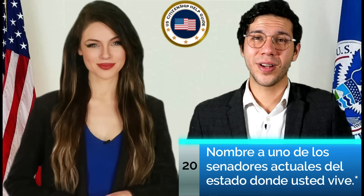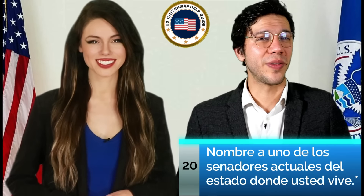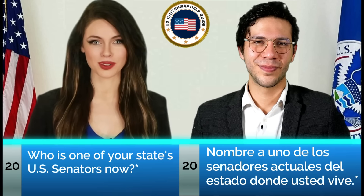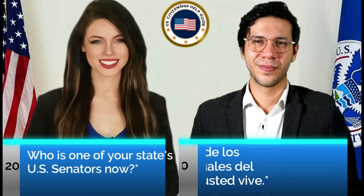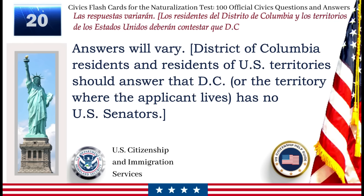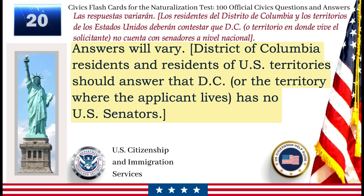Nombre a uno de los senadores actuales del estado donde usted vive. Who is one of your state's U.S. senators now? Las respuestas variarán. Los residentes del Distrito de Columbia y los territorios de los Estados Unidos deberán contestar que D.C. o territorio donde vive el solicitante no cuenta con senadores a nivel nacional. Answers will vary. District of Columbia residents and residents of U.S. territories should answer that D.C. or the territory where the applicant lives has no U.S. senators.